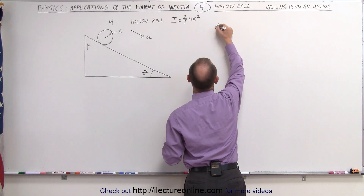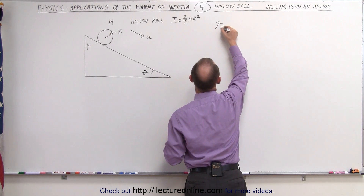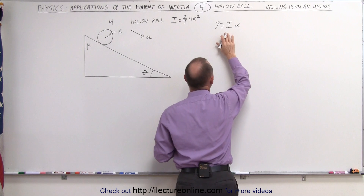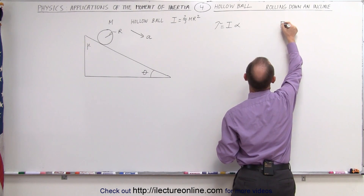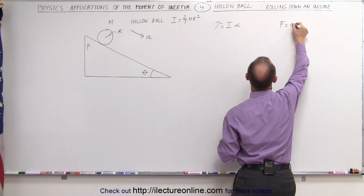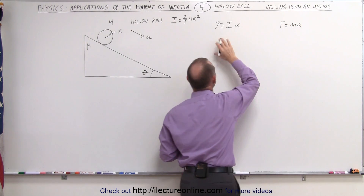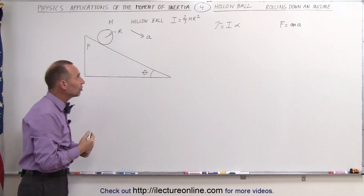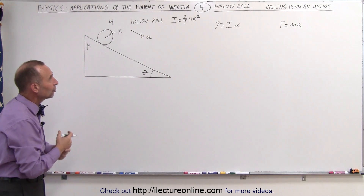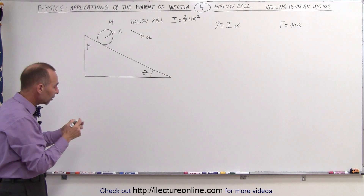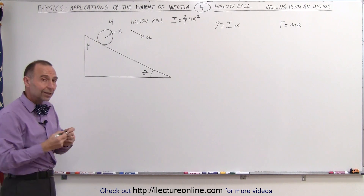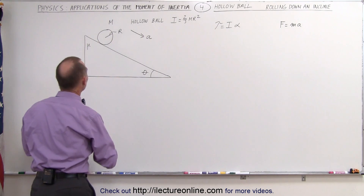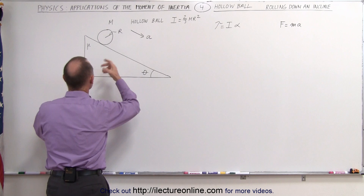The first equation is that the torque is equal to I times alpha. This is the rotational equivalent of F equals ma, because it's the torque that causes the angular acceleration — we have to take that into account as well. Now, what causes the torque? Let's find out using the forces involved on the ball.